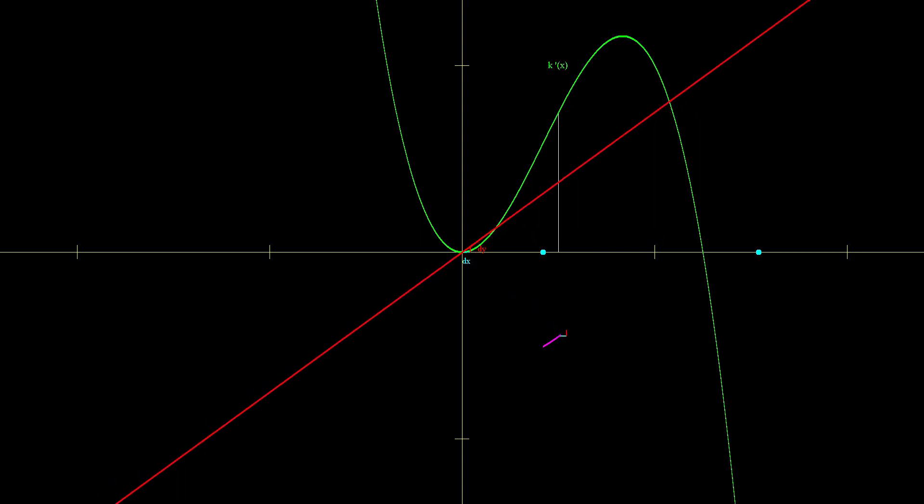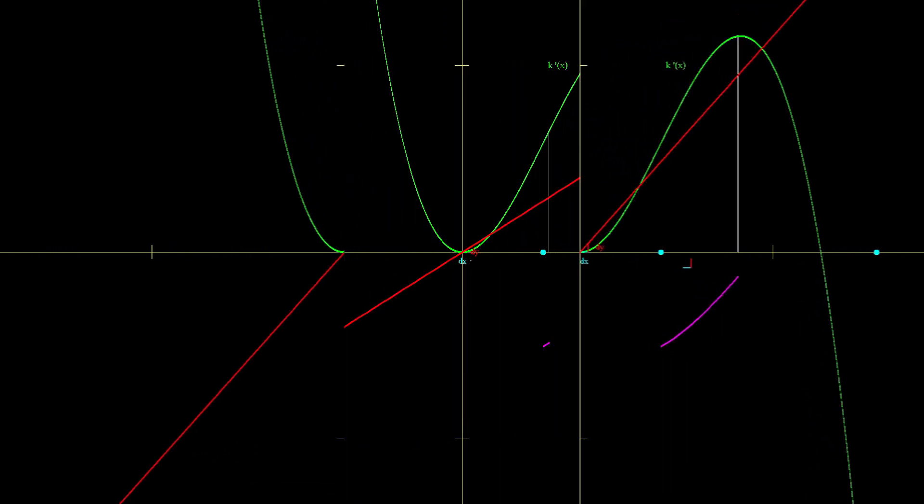Now we will take the next value from k prime, repeat the process, and plot it next to where we had plotted the previous change. Slowly we will start building the function k between those two bound points. Also, do note that the dy's and dx look quite big here, but that's just for illustrative purposes. In reality, it would look something even smaller than this.